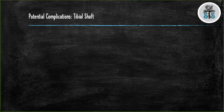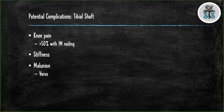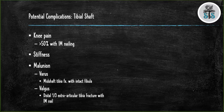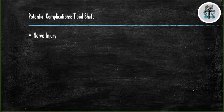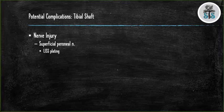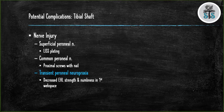There are several known complications when treating tibial shaft fractures. Patients will complain of knee pain after nailing. Stiffness is secondary to prolonged immobilization. Varus malunions are common if there is a tibial shaft fracture with an intact fibula, as the fibula acts as a buttress pushing the tibia into varus. Valgus malunions are common with distal third extra-articular tibial shaft fractures treated with IM nails. Compartment syndrome most commonly occurs in the anterior compartment of the leg. Using a percutaneous plate can potentially injure the superficial peroneal nerve, and proximal screws of your nail can injure the common peroneal nerve.